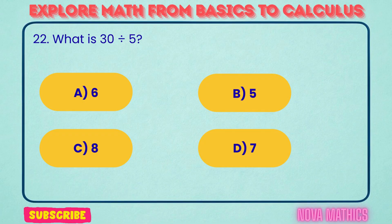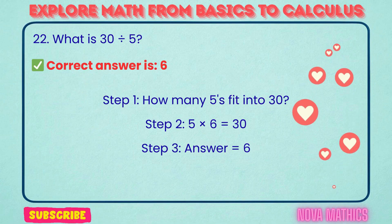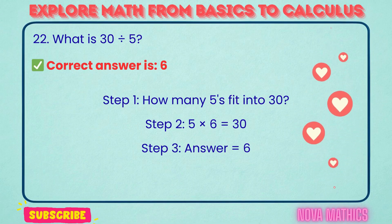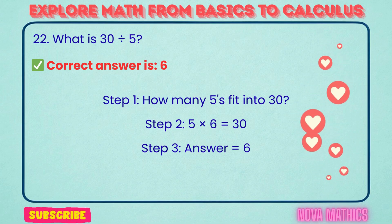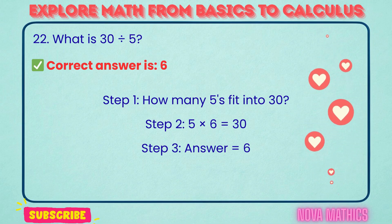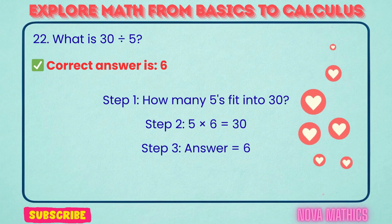22. What is 30 divided by 5? Correct answer is 6. 30 divided by 5 equals 6. We find this because 5 times 6 is 30.